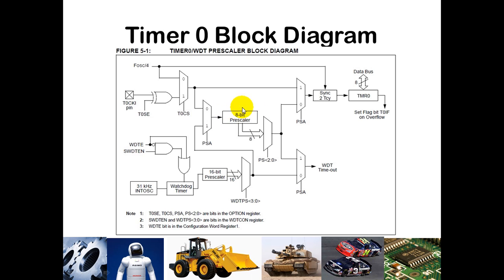We use the same register for timer 0 as for the watchdog timer. Down here there's a prescaler determining whether we're going to use a prescaled version or just the direct version of our oscillator. So we have that 8-bit prescaler that can slow things down. The watchdog timer and timer 0 are highly related.